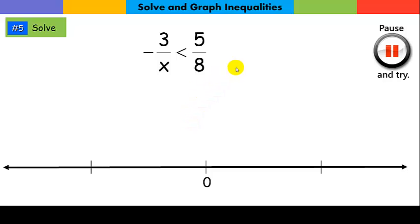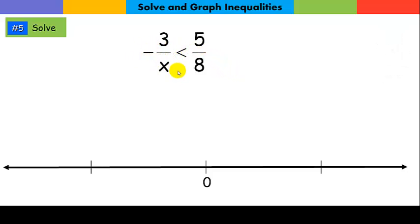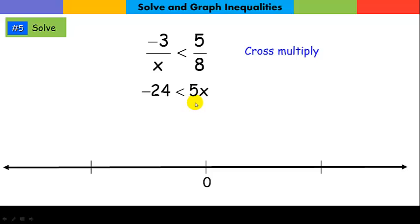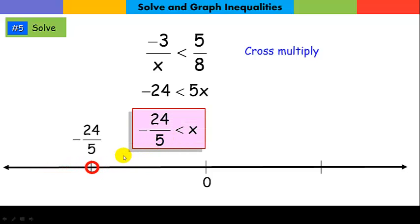For practice problem 5, this one can be tricky because of the negative out front. Whenever there's a negative on the outside, move it to the top before using cross multiplication. Then 8 times negative 3 gives negative 24 on one side, and 5x on the other — the 5 doesn't affect the inequality. Dividing both sides by 5, the boundary point is at negative 24 over 5, the boundary is open, and the arrow goes to the right for all x greater than negative 24 over 5.